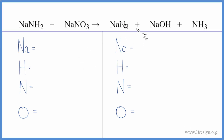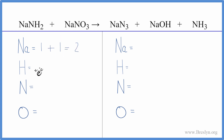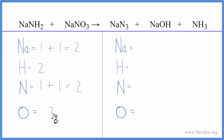There's a lot going on in this equation. We have sodium amide plus sodium nitrate. Let's count the atoms and try to balance it. We have one sodium here plus one sodium here, so we have two sodium atoms. Hydrogens: we have two. Nitrogens: we have one here plus one there, so two nitrogens. And then three oxygen atoms on the reactant side.